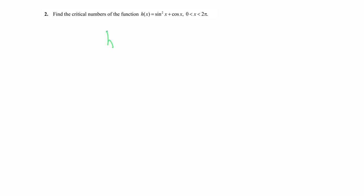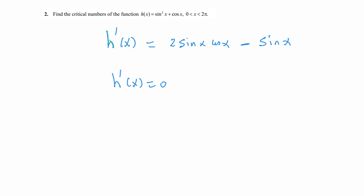h prime of x is the derivative of sine squared of x, which is 2 times sine of x cosine of x, plus the derivative of cosine of x, which is minus sine of x. Does h prime of x exist on the interval zero to pi? Yes — any number you put in gives a real output, so h prime of x is well defined everywhere. The slope never goes to infinity.